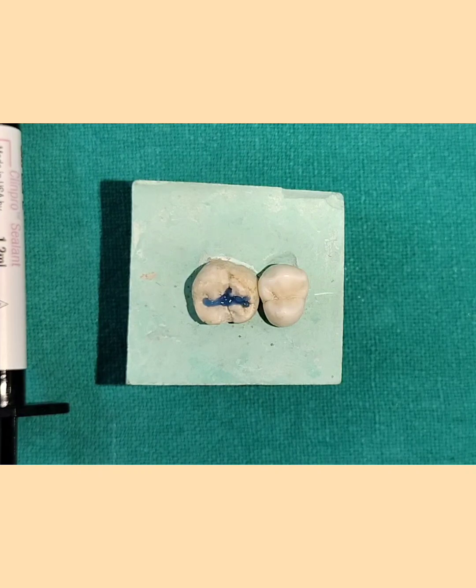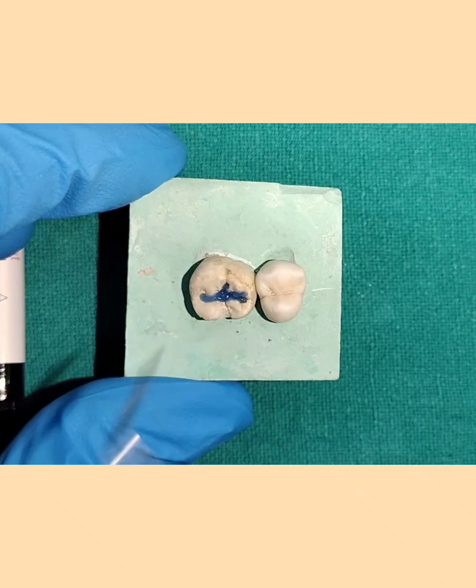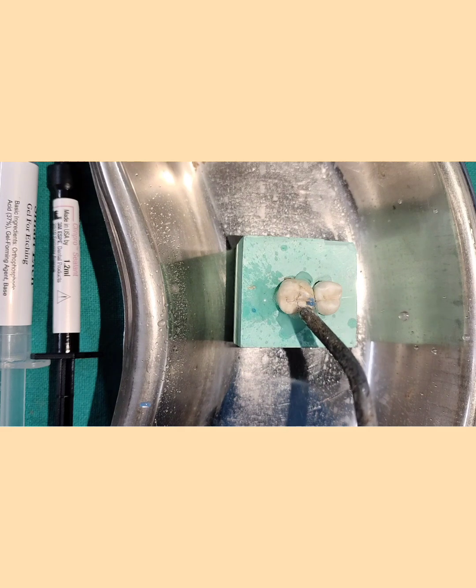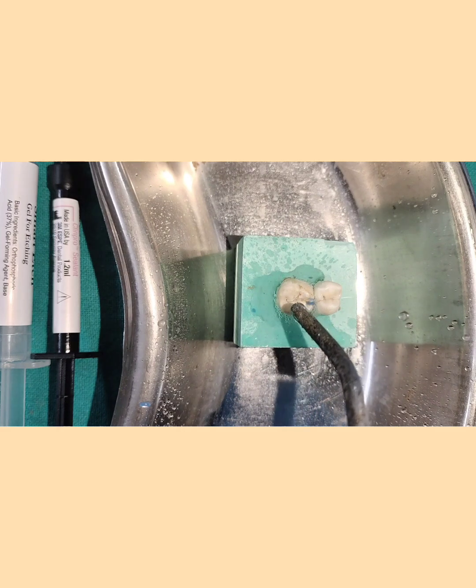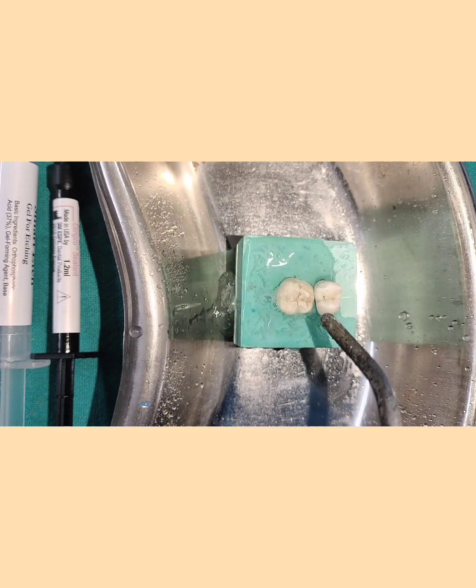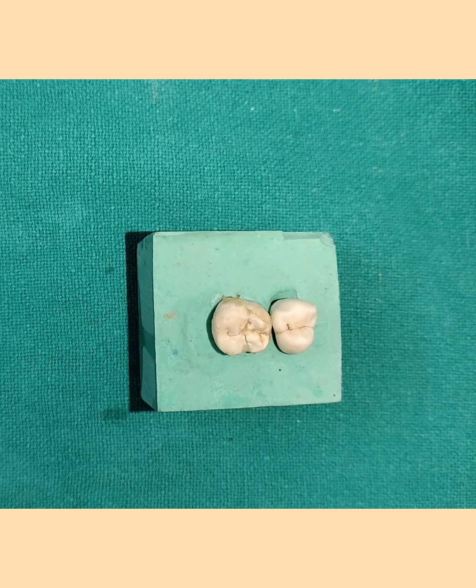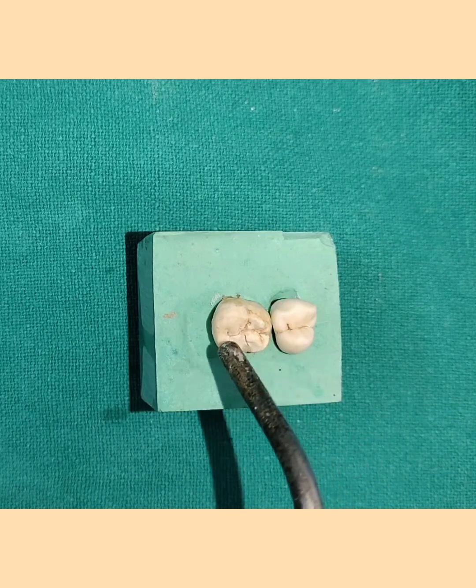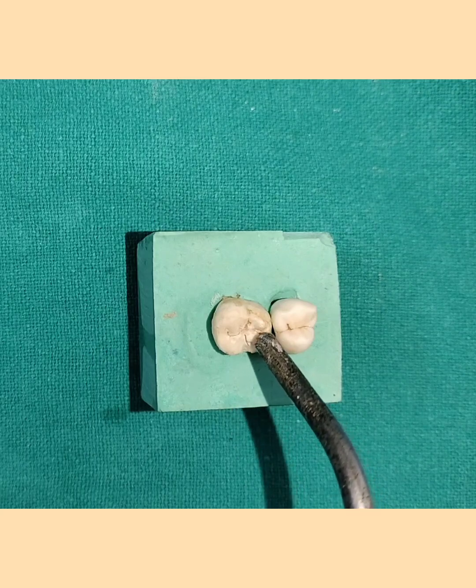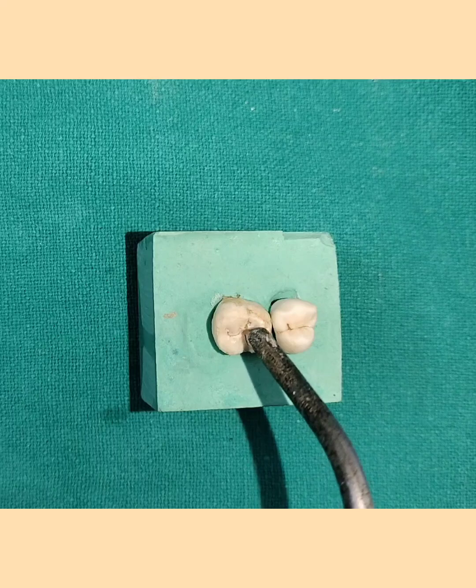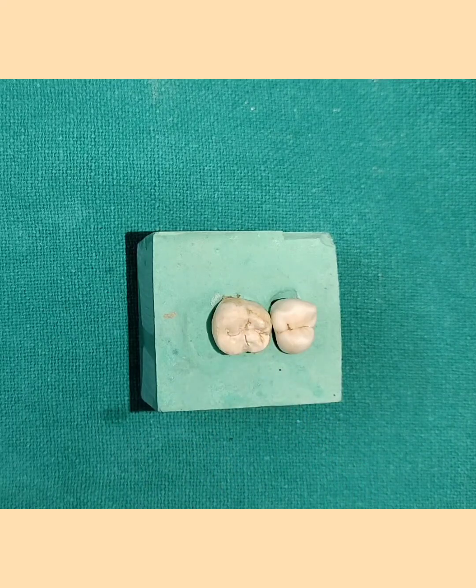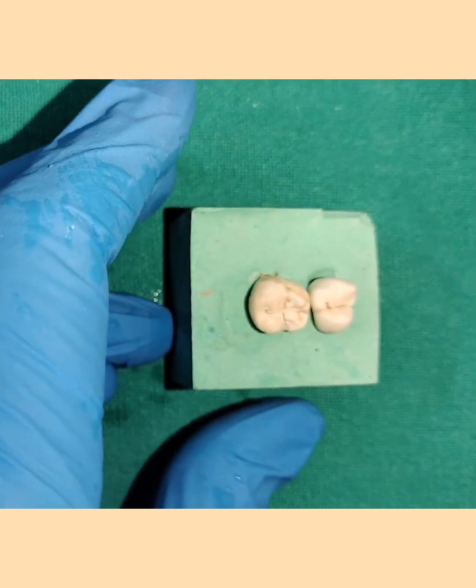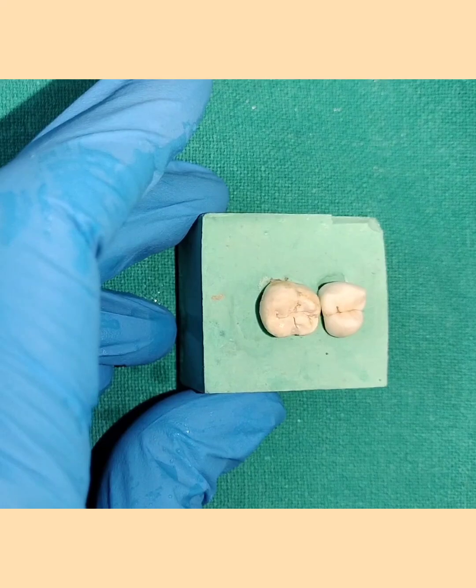So now what we are going to do is we are going to wash this surface properly. After this dry this surface. And check for chalky white surface or frosty surface. You can see that. Once it is dry you can see that. Dry for around 15 seconds. And you can appreciate the dry and chalky surface.